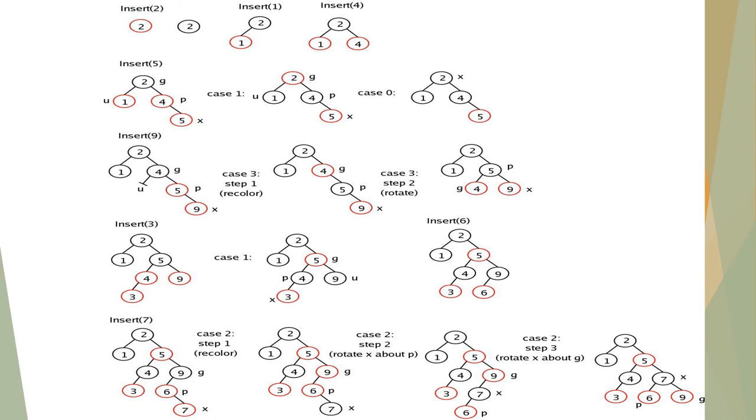Now insert 6. As it is greater than 2, it goes to the right sub-tree. But it is smaller than 9, so it comes to the left side. Here no need to change the colors because it obeys all the properties of red-black tree.